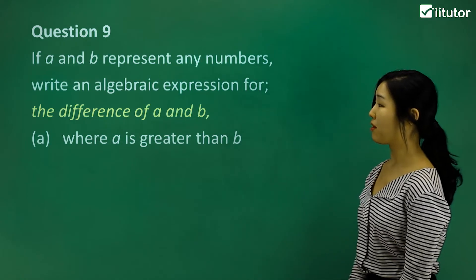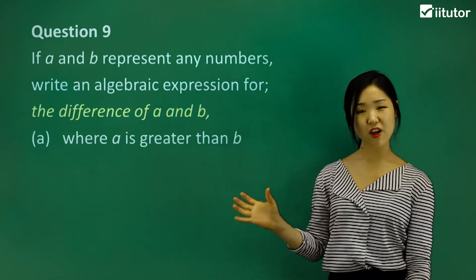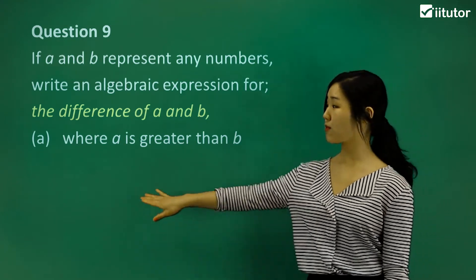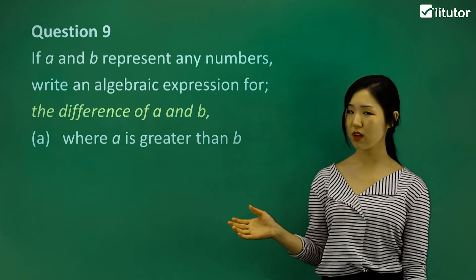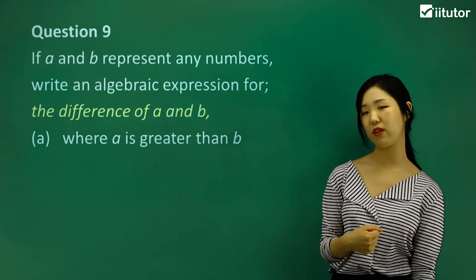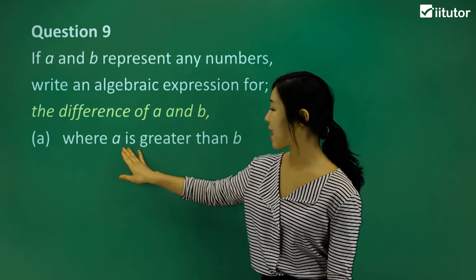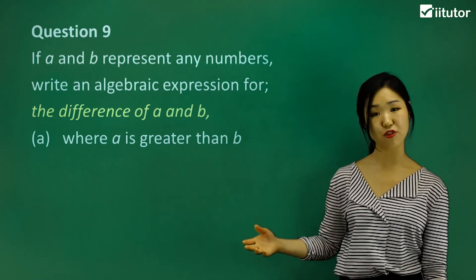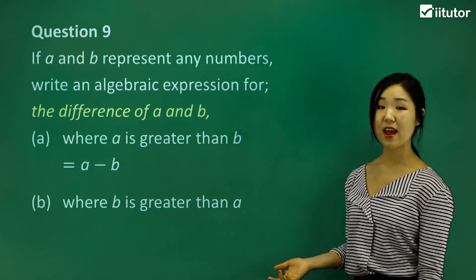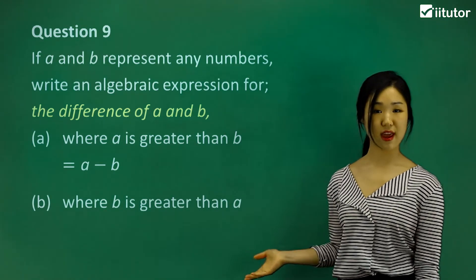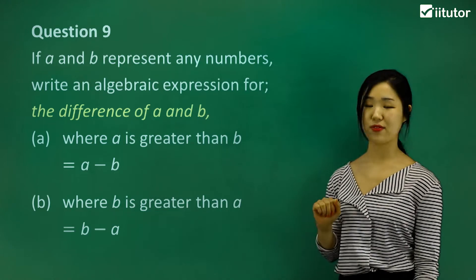Question nine: if a and b represent any numbers, write an algebraic expression for the difference of a and b. The difference is always the larger number minus the smaller number — that represents the difference, which is subtraction. If we do the smaller number minus the larger number, we'd get a negative outcome. In part a, where a is greater than b, a is the larger number, so we do a minus b. In part b, where b is greater than a, b is the larger number, so we do b minus a.